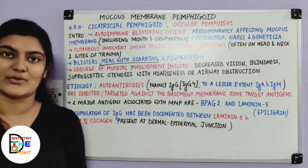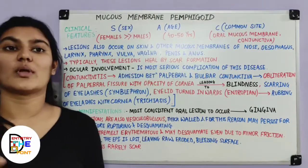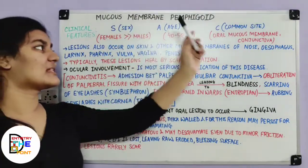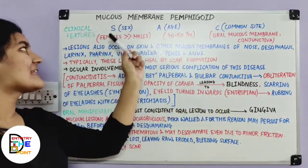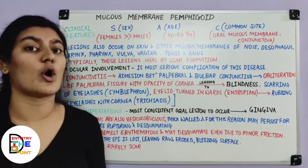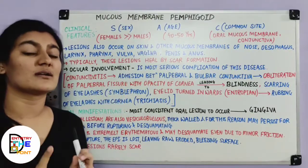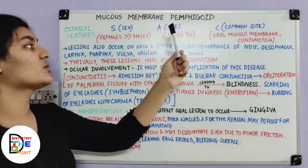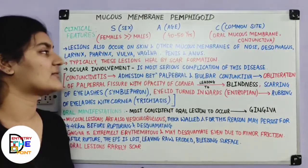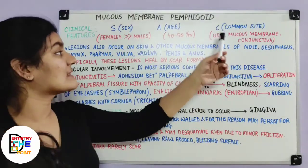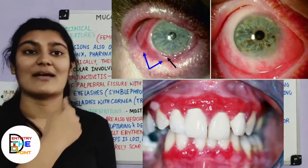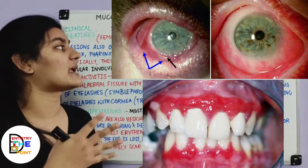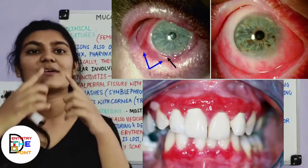Moving to the clinical features — we start with SAC: sex, age, and common site. Females are two times more commonly involved than males, so there is a female predilection. The age group commonly affected is 40 to 50 years — elderly individuals. The most common sites are the oral mucous membrane and the conjunctiva, which is why it is also known as ocular pemphigus.